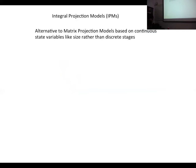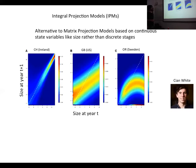We have thought about using Integral Projection Models (IPMs). For those unfamiliar, these are an alternative to matrix projection models, based on a continuous state variable like size rather than dividing the population into discrete stages. We use a continuous variable — commonly size, though it can be other things — to predict the different demographic rates at the individual level.